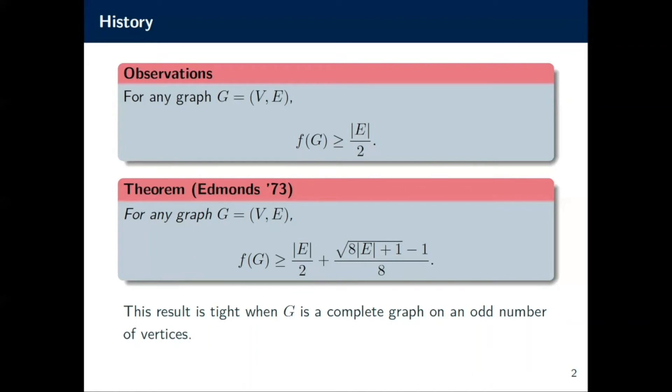It's natural then to ask, well, what happens when we know our graph is not complete or very much not complete? Namely, what happens when we know our graph is sparse or does not contain some subgraph H?